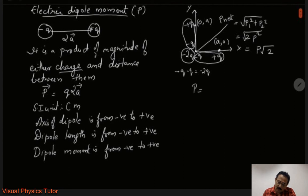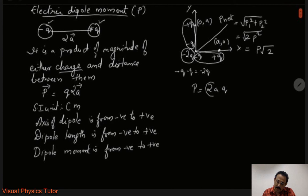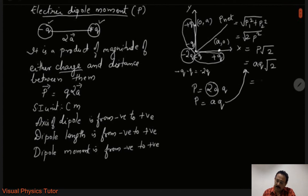Now for P: looking at the first diagram, the distance between the negative charge and the positive charge is A (not 2A, since the dipole length here is A). So P = Q × A. Substituting into P net = P√2, we get P net = √2 × Q × A. This is the net dipole moment of this system. Hope you have understood this — thanks!